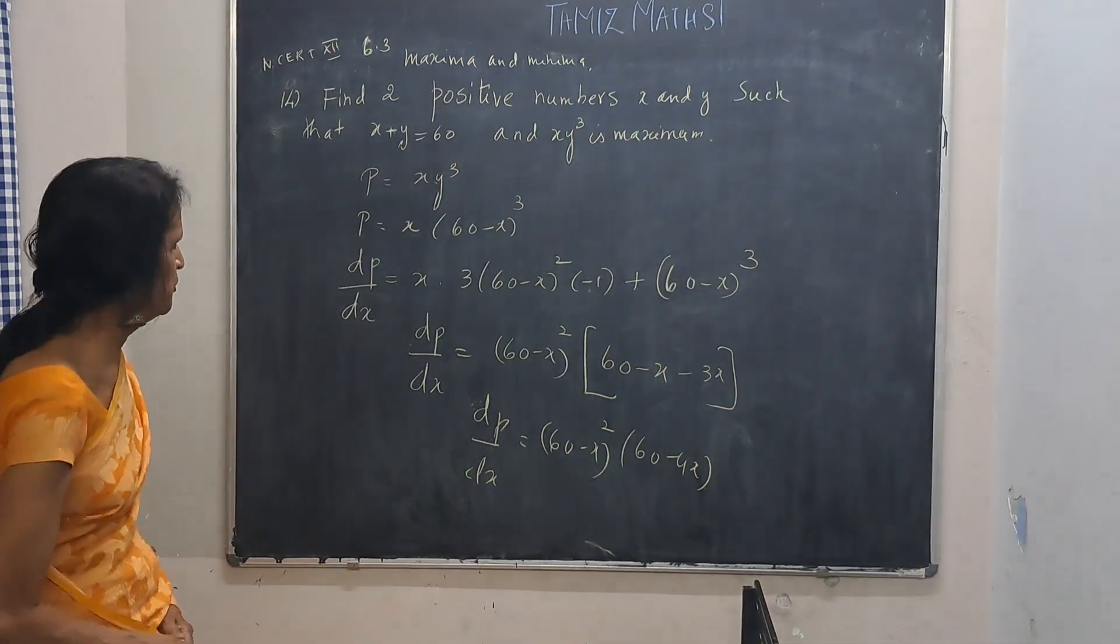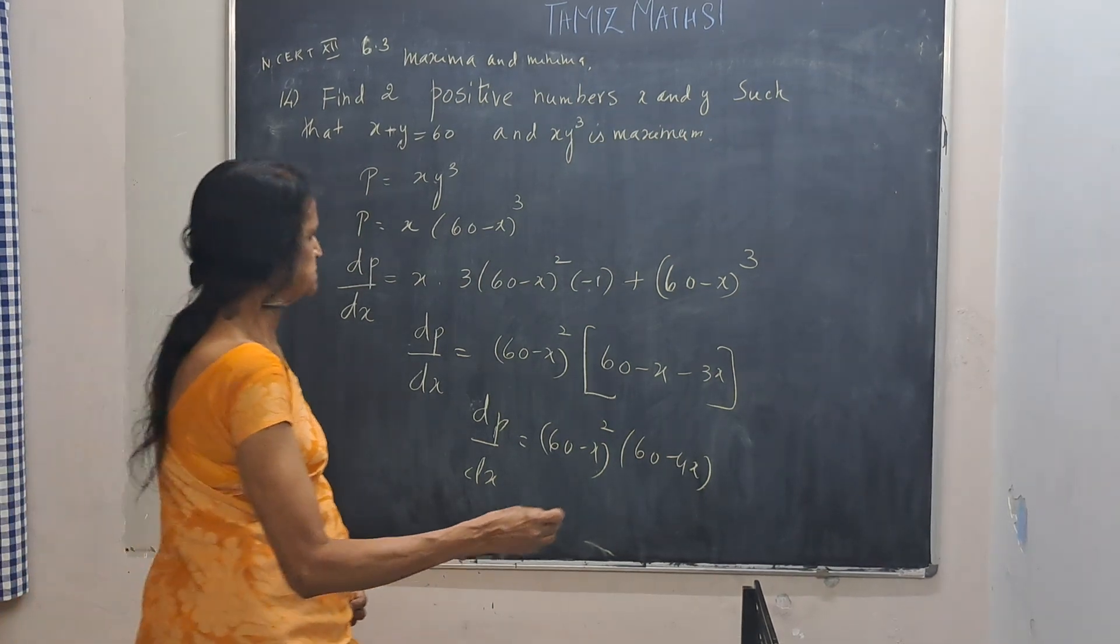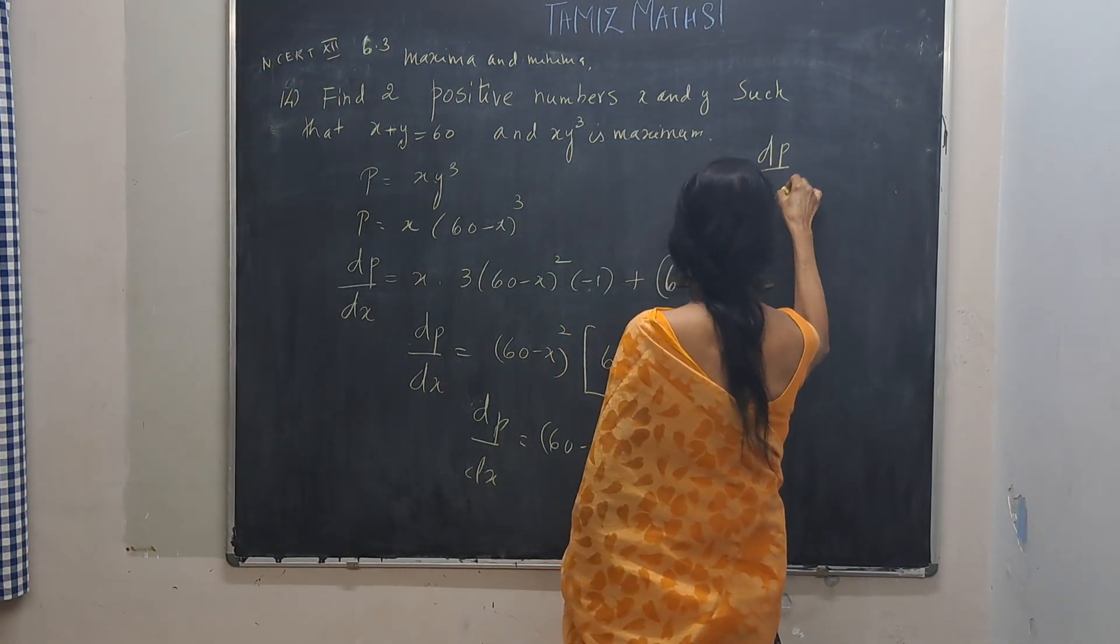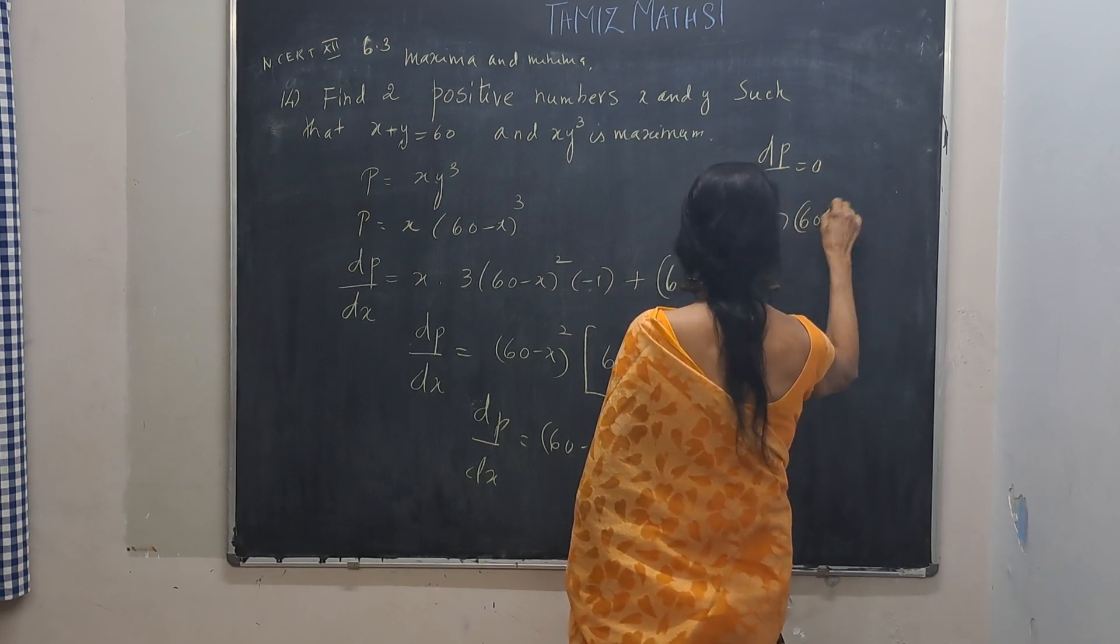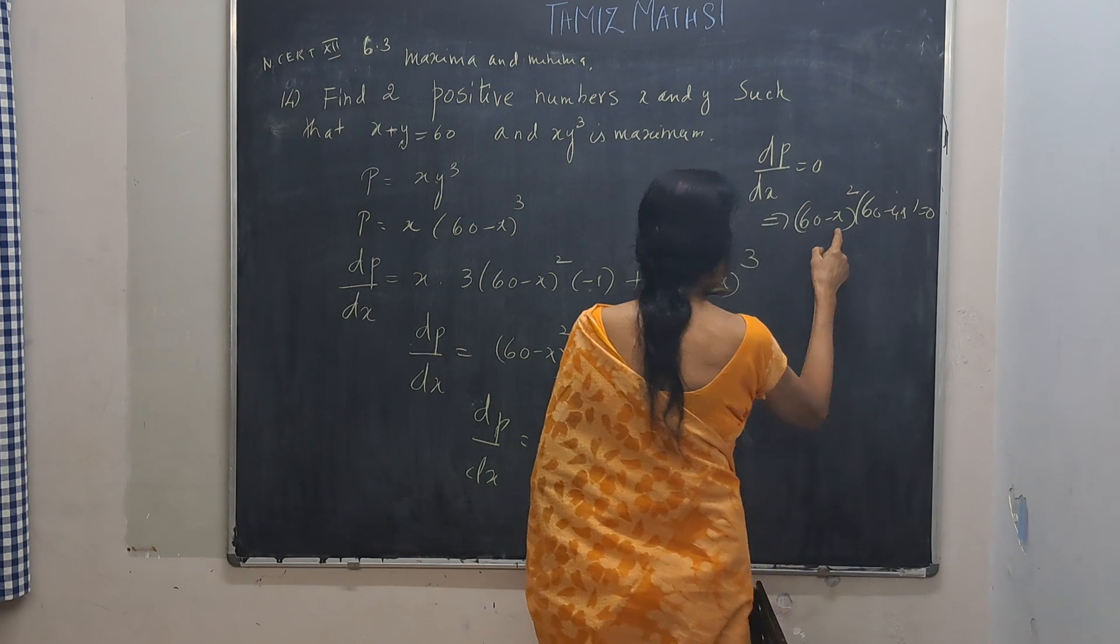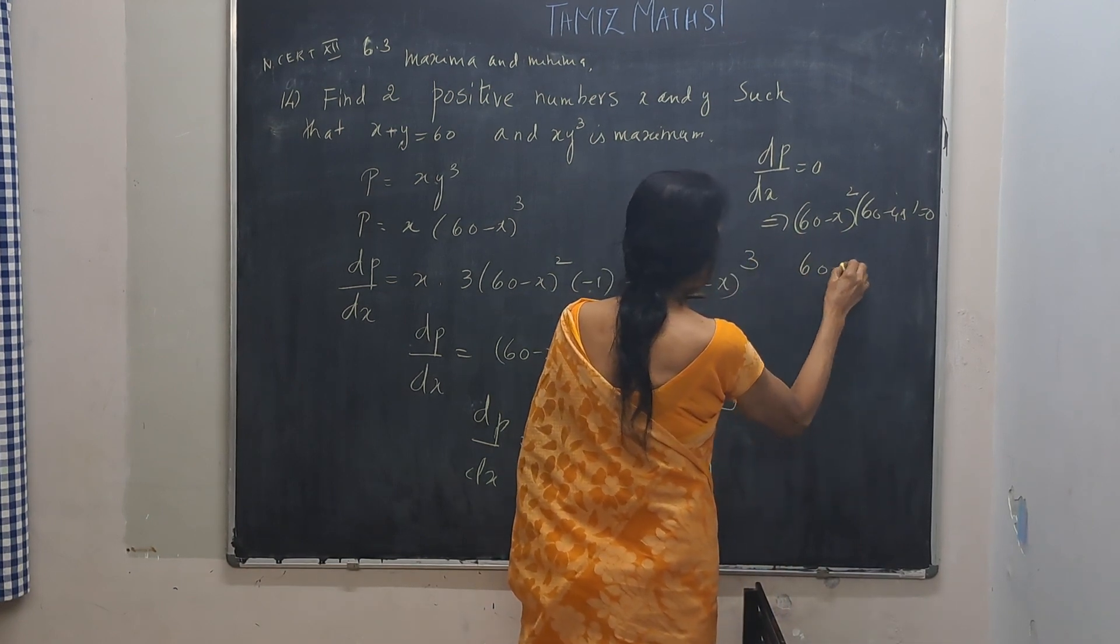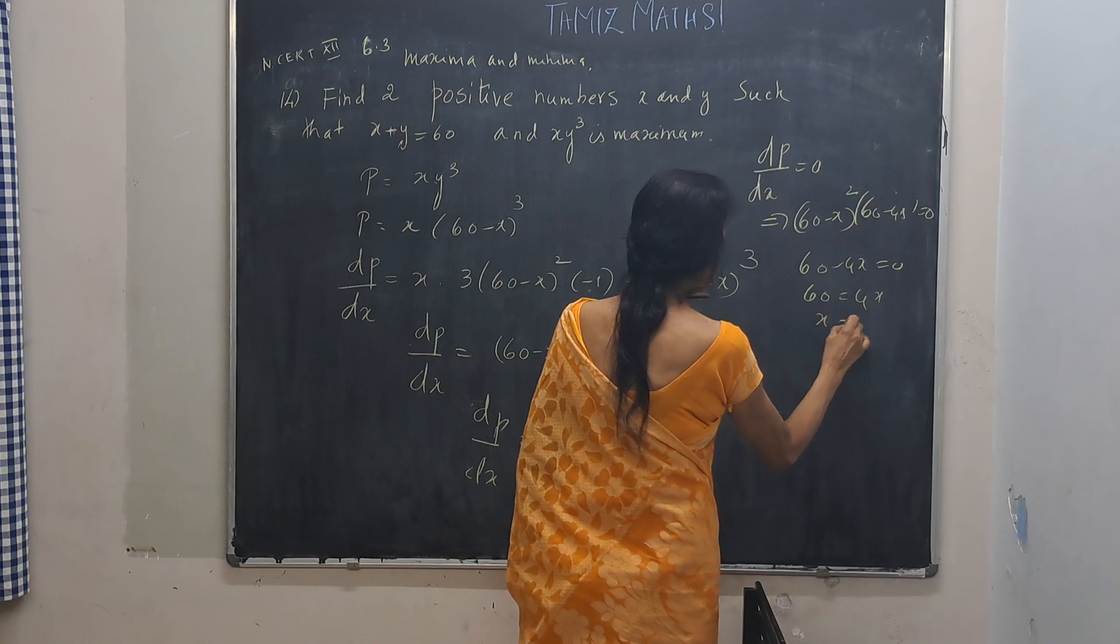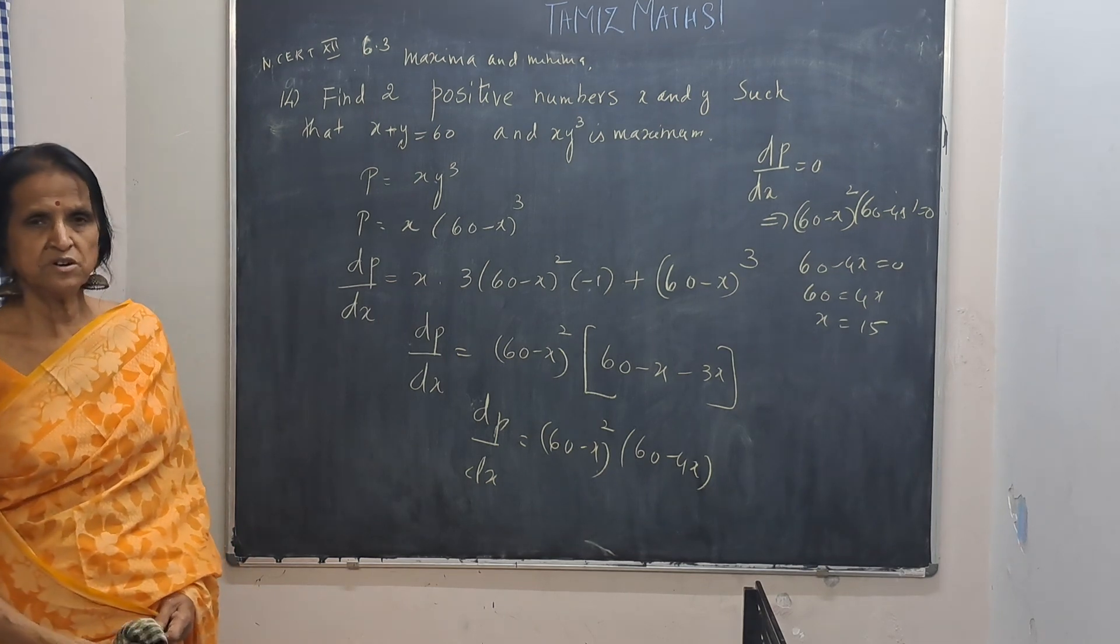Now for a maximum or a minimum, first derivative is 0. So dP by dx is 0 implies 60 minus x whole square into 60 minus 4x is equal to 0. Definitely x can't be 60. Then y will become 0 in that case. So 60 minus 4x is 0, x is 15. Now let that be done. Problem is not complete.